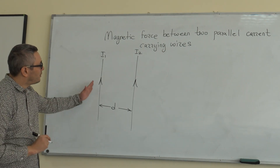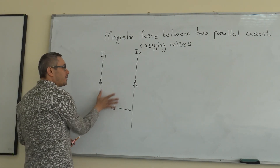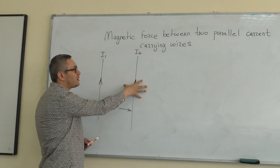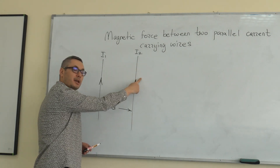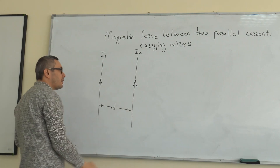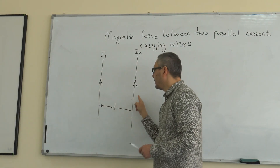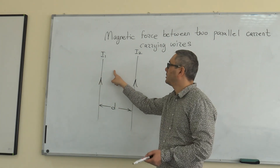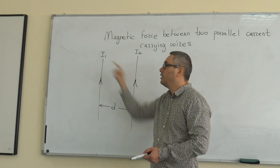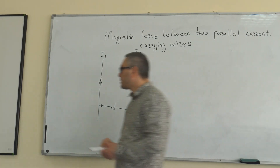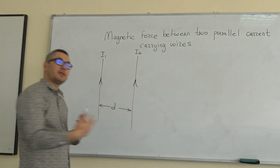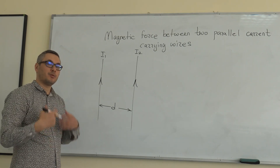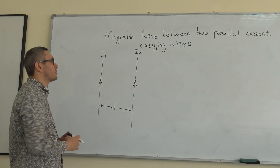The first current will create a magnetic field in the region where there is a second current, and this magnetic field will cause a magnetic force on the second current. The same thing is true for the second current — it will create a magnetic field in the region of the first current, and that field will create a force on the first current. This means there will be a force of interaction. So let's find out the direction and magnitude of that force.